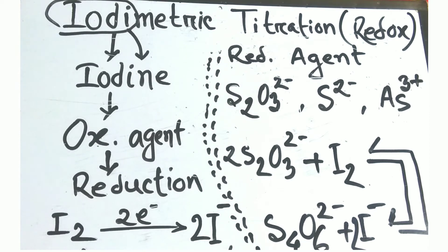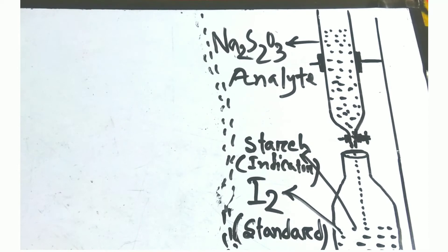Let's start the titration. Here you can see the burette and it is filled up with sodium thiosulfate. It is an analyte in the conical flask. We add iodine solution and starch as an indicator.